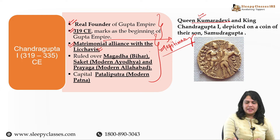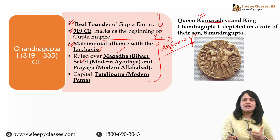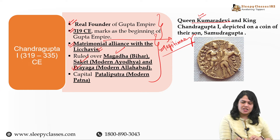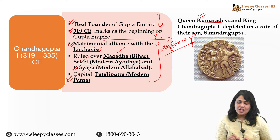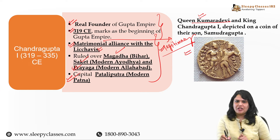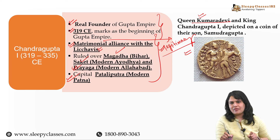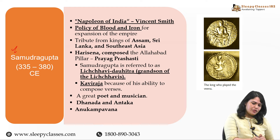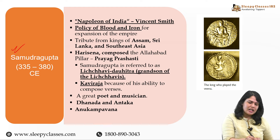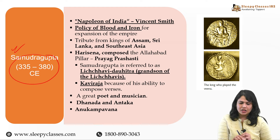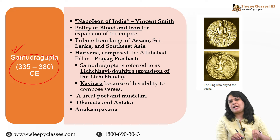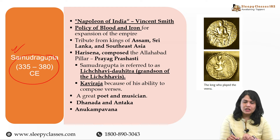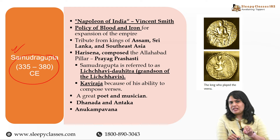Aap yahan pe dekhenge ki inka jo core area hai, woh Magadh, Saket (modern day Ayodhya), Prayag, Allahabad tak extend karta tha, aur inki capital woh Pataliputra thi. Ye Kumaradevi type coins ke liye famous hain, jo Samudragupta ke dwara issue karvaye gaye. Samudragupta ka time period raha 335 se lekar 380 CE tak, aur hum dekhte hain is period ke andar empire ka kaafi zyada extension aur expansion hota hai, apne successful military campaigns ke wajah se hi.